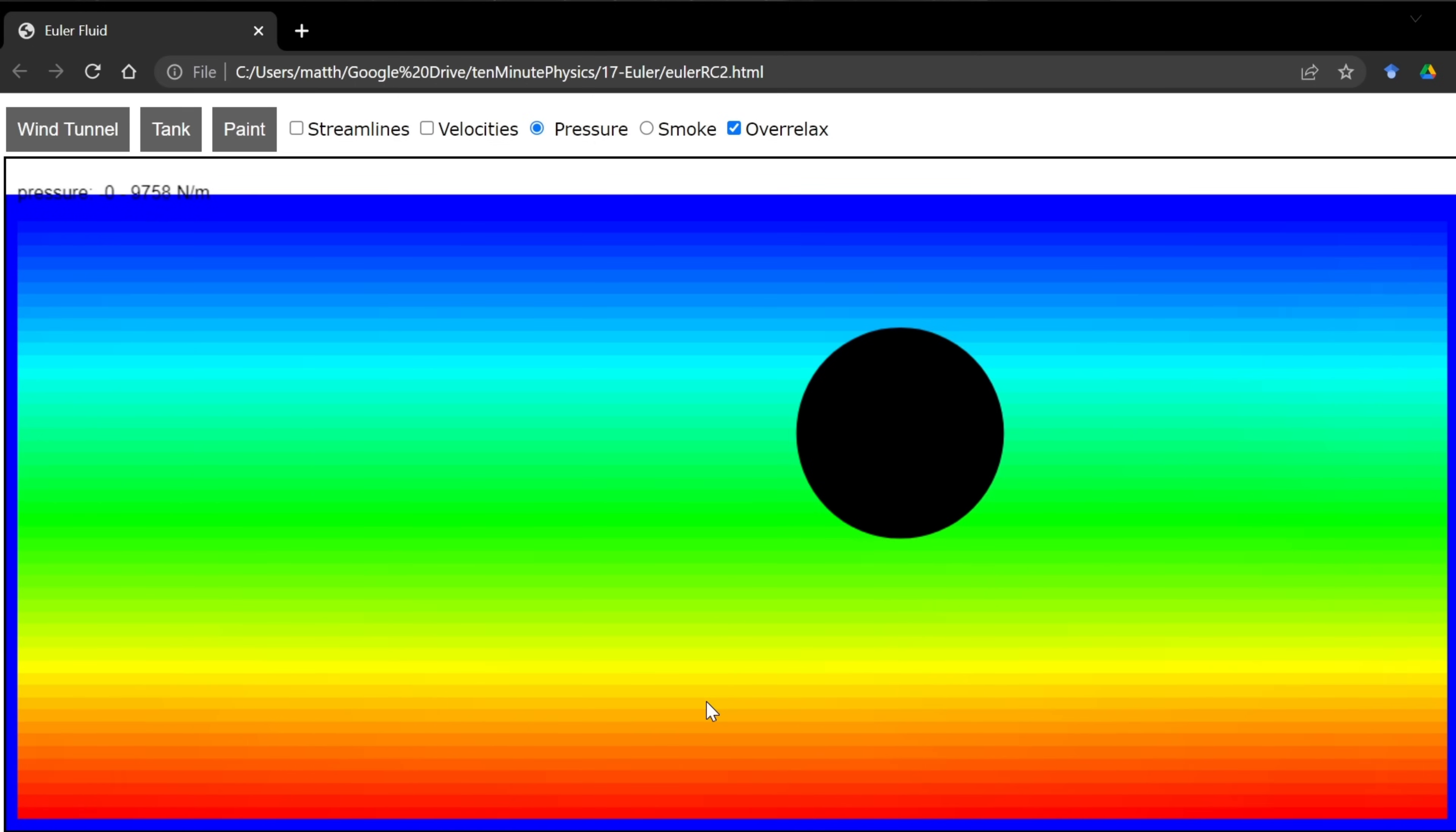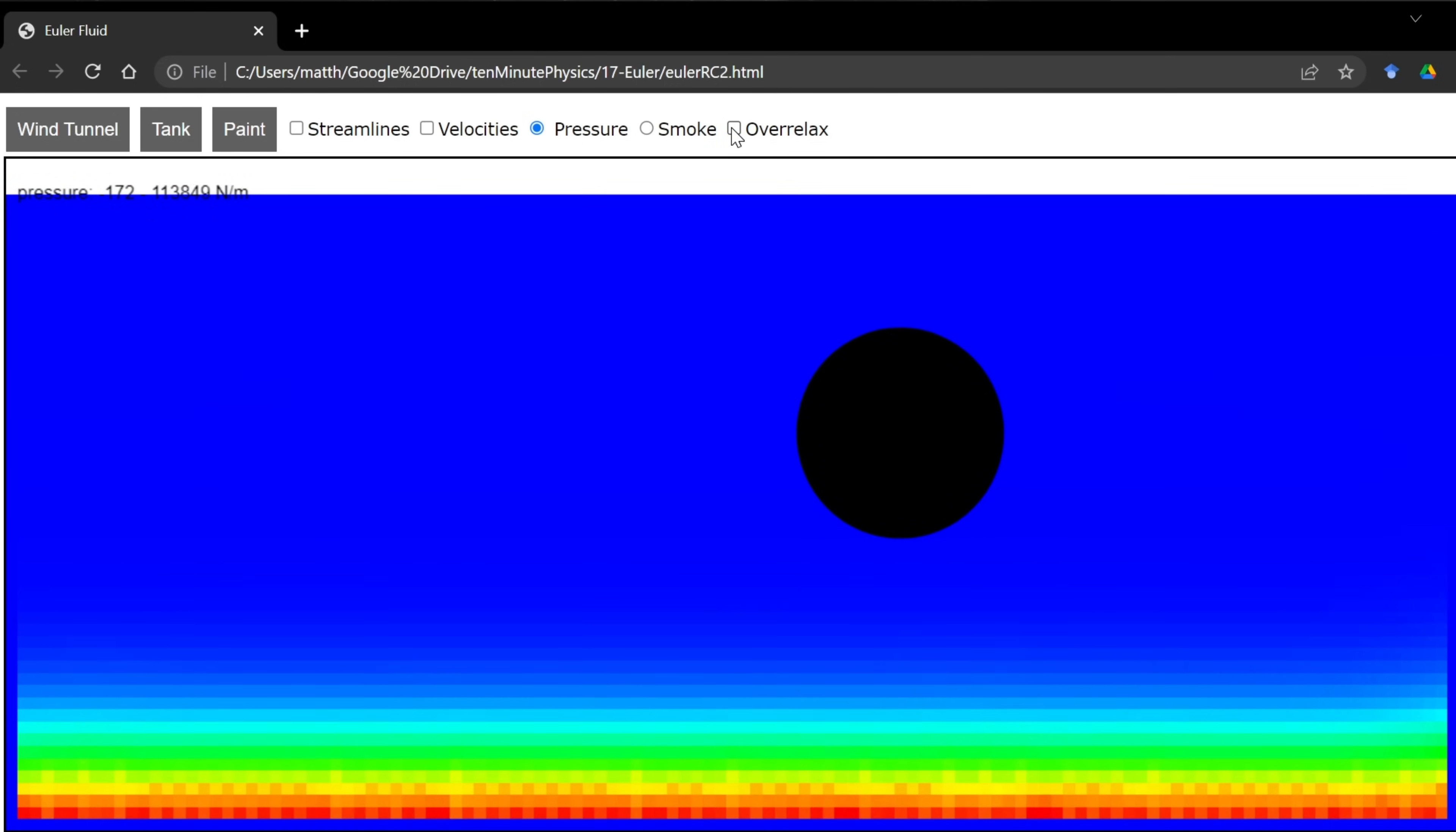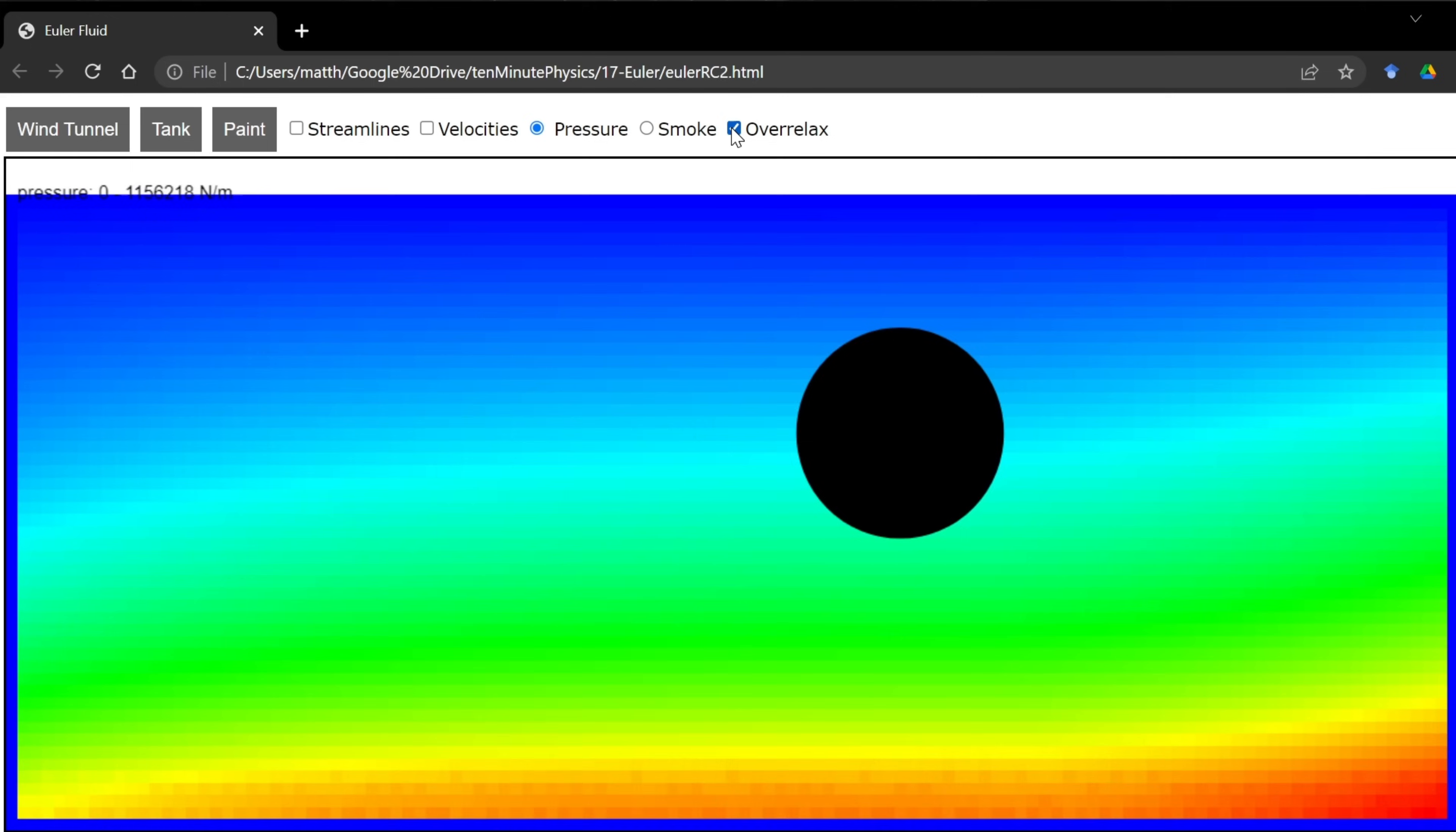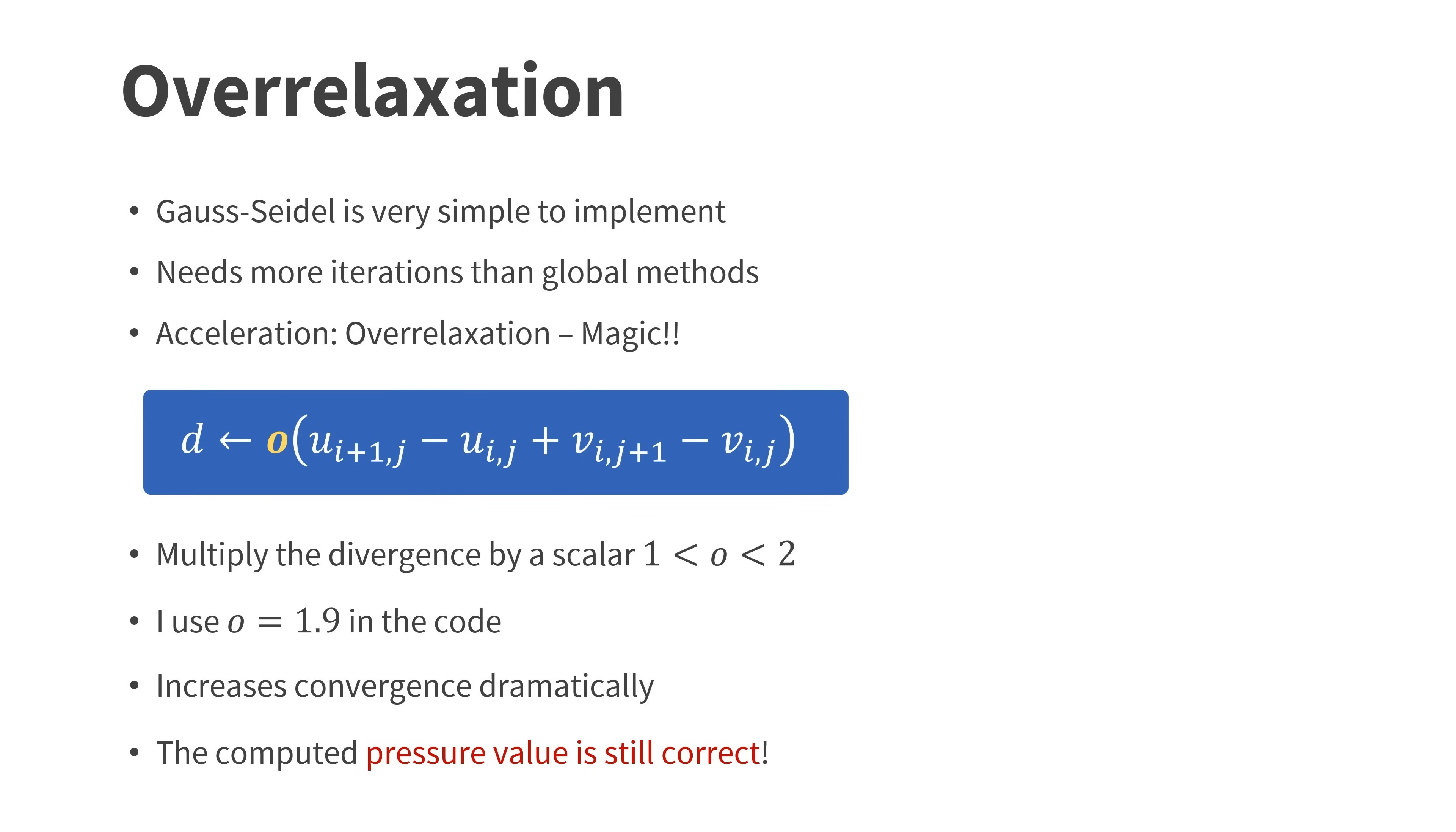Let me go back to the tank demo. As we saw we get the pressure gradient immediately. Now let me turn off over-relaxation. And as you can see the simulation completely collapses. Let's turn it on again and we get the correct pressure field again. The nice thing about over-relaxation is that the pressure values are still correct.